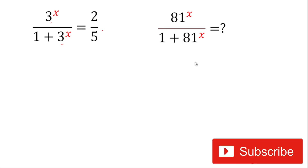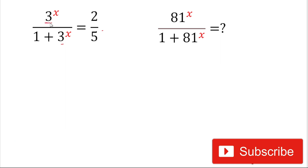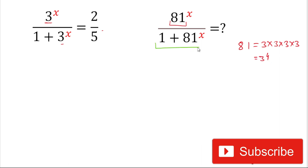Please subscribe the channel and do not forget to give thumbs up to the video. Let's start the video now. If you look carefully, here it is 3 to the power x and we have to find the value of 81 to the power x. Now 81 is 3 multiplied by 3 multiplied by 3 multiplied by 3, so 81 can be written as 3 to the power 4.